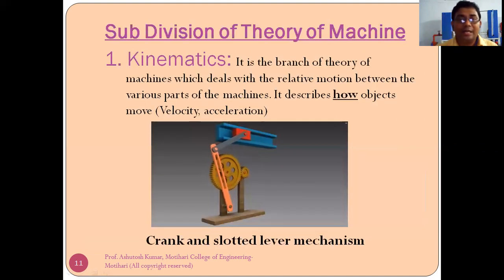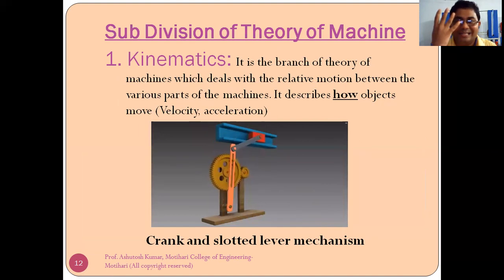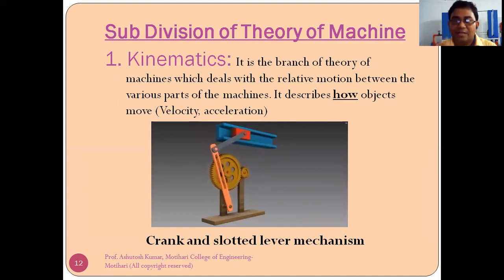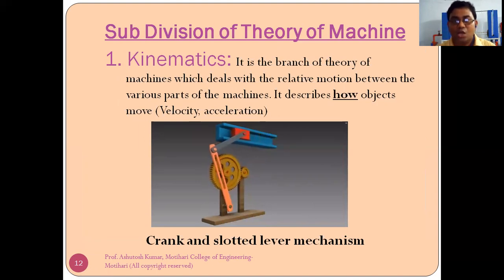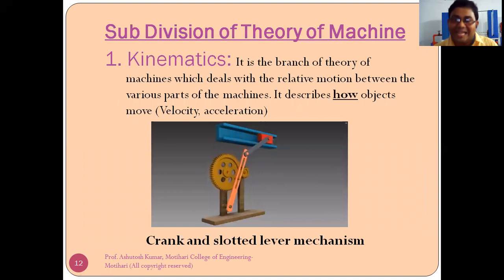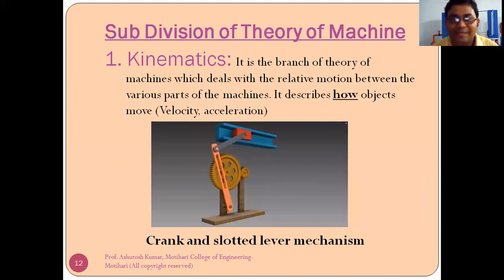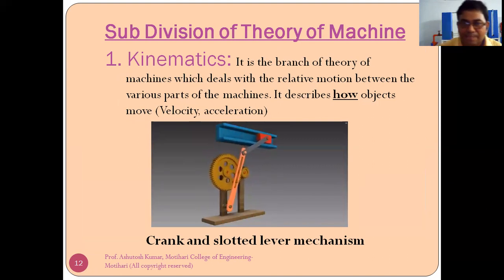Now we have to understand the sub-divisions of theory of machine. Theory of machine is further classified into four categories: the first one is kinematics, the second is dynamics, the third is kinetics, and the fourth is statics. Here in this course we will study kinematics. Kinematics is the branch of theory of machine which deals with relative motion between the various parts of the machine.